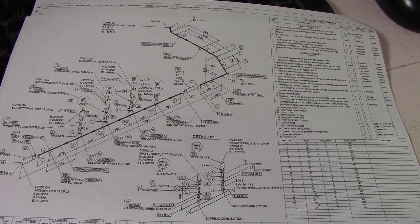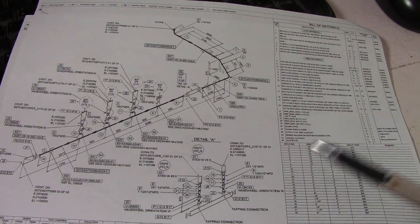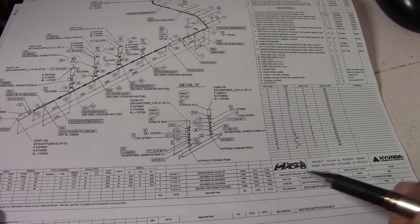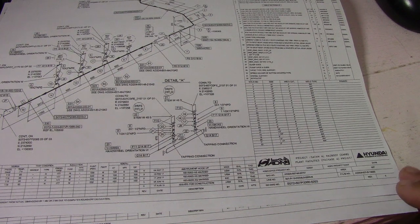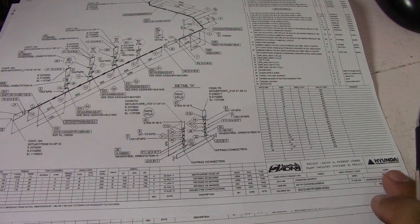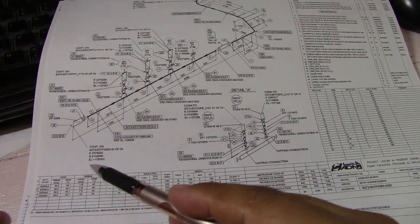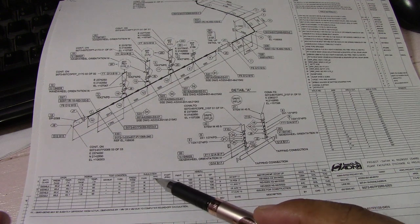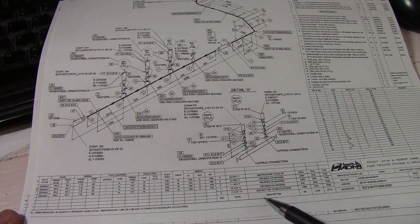Hi guys, welcome to the Piping Welding and NDT channel. We have an isometric drawing here and I will teach you how to read it. In this isometric drawing we have a bill of materials, and here is the information: the line number, isometric drawing number, drawing number, revision, sheet, area, VN ID number. In this column we have material class, operating pressure, design and test conditions, insulation, paint, and PWHT requirements.